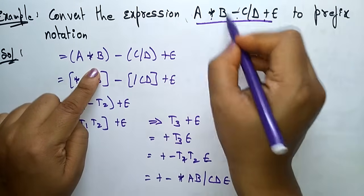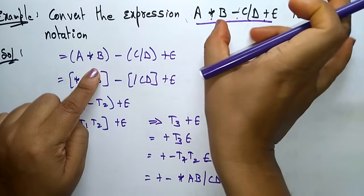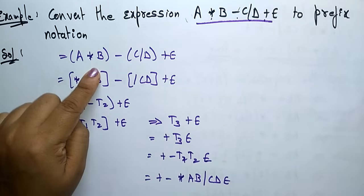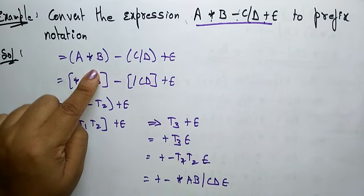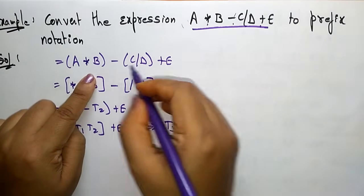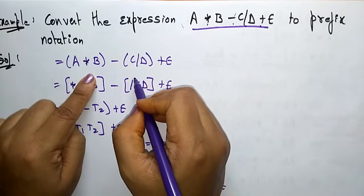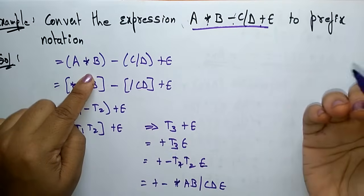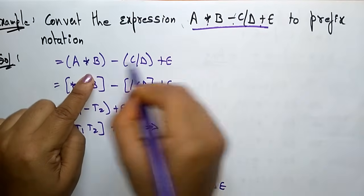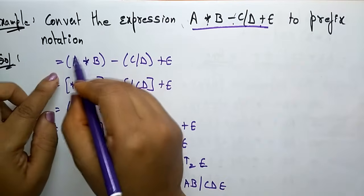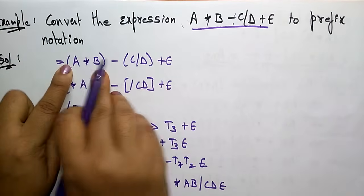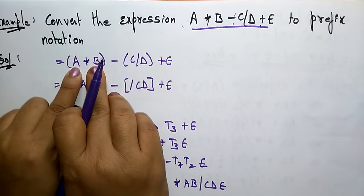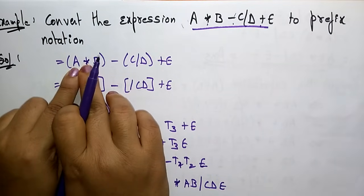Why am I taking only A star B and C by D? Because they are having higher priority operators. Based on the priority of your operators, you can place the parenthesis. Star and division have the highest priority compared to minus and plus. So A star B is one bracket and C by D is another — each having two operands and one operator.